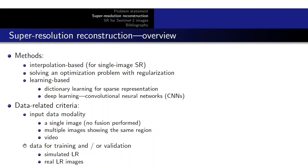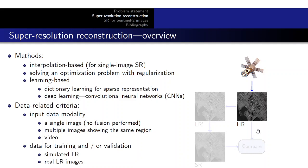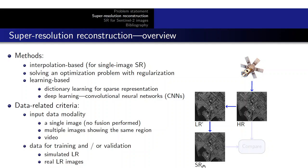We can also focus on the data used for training the networks and validating results, distinguishing between simulated and real low-resolution images. If we have a high-resolution image acquired by a certain satellite, we may downgrade it to obtain a simulated low-resolution result, then process it to obtain a super-resolved image, and compare that outcome with the original high-resolution image to train and evaluate the algorithm.